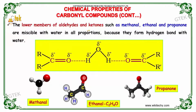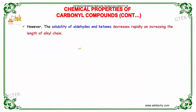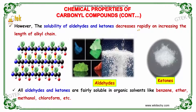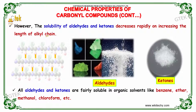The lower members of aldehydes and ketones such as methanal, ethanal, and propanal are miscible with water in all proportions, because they form hydrogen bonds with water, as we can see here. However, the solubility of aldehydes and ketones decreases rapidly on increasing the length of the alkyl chain.